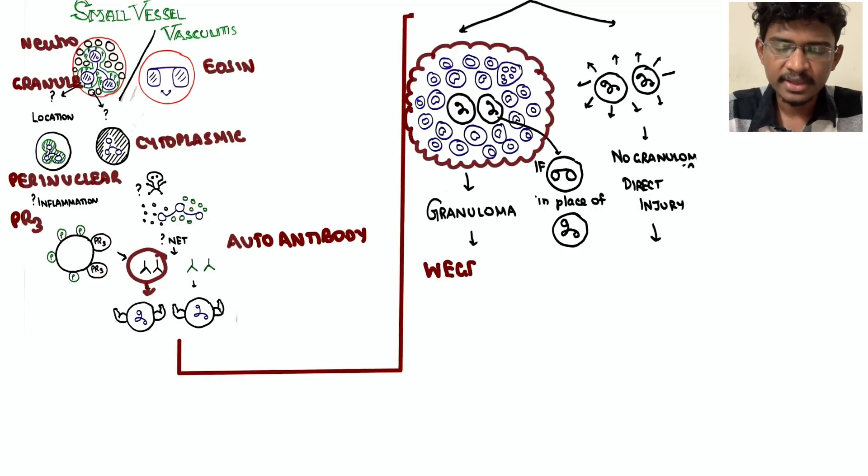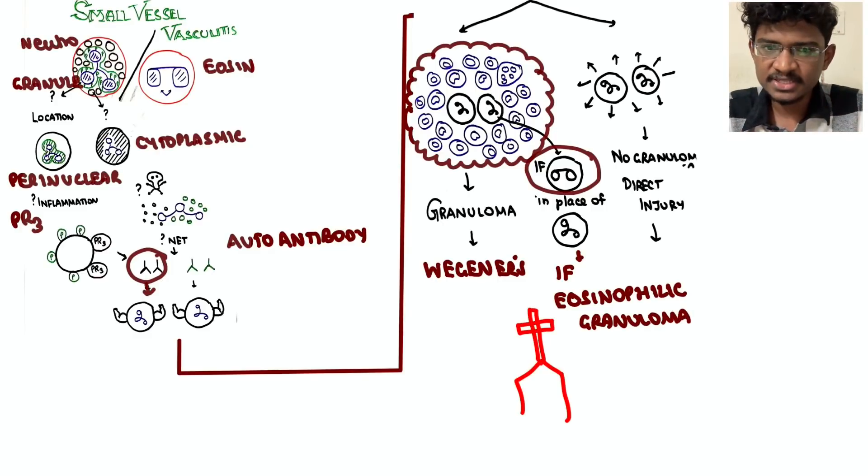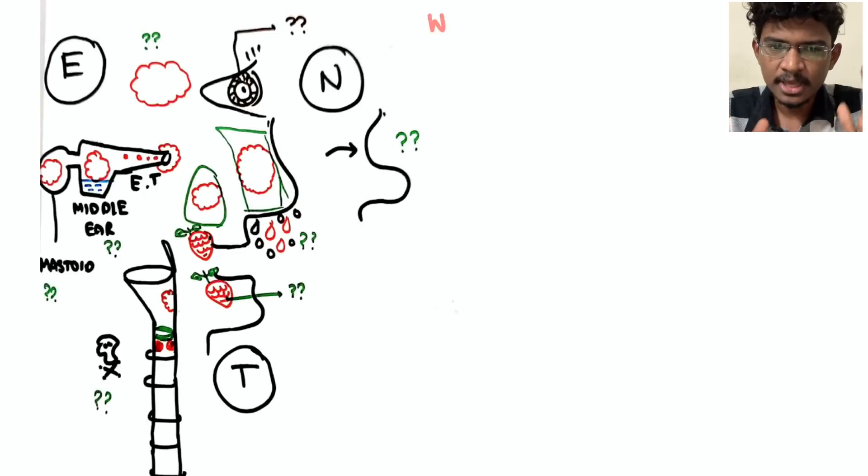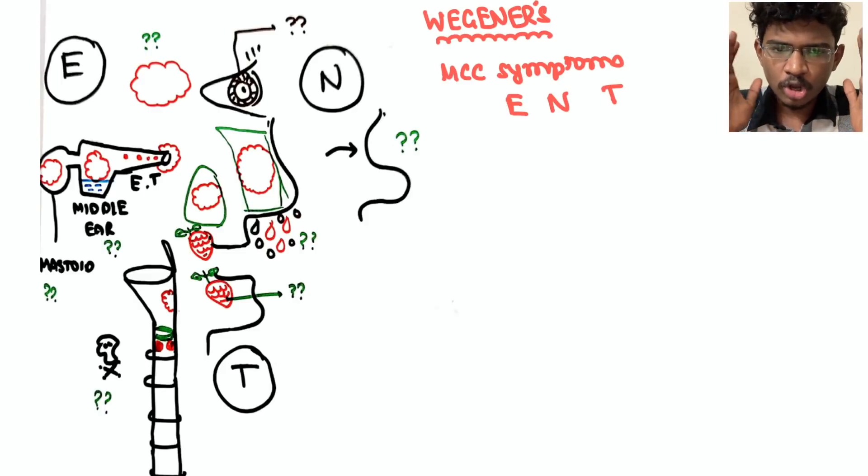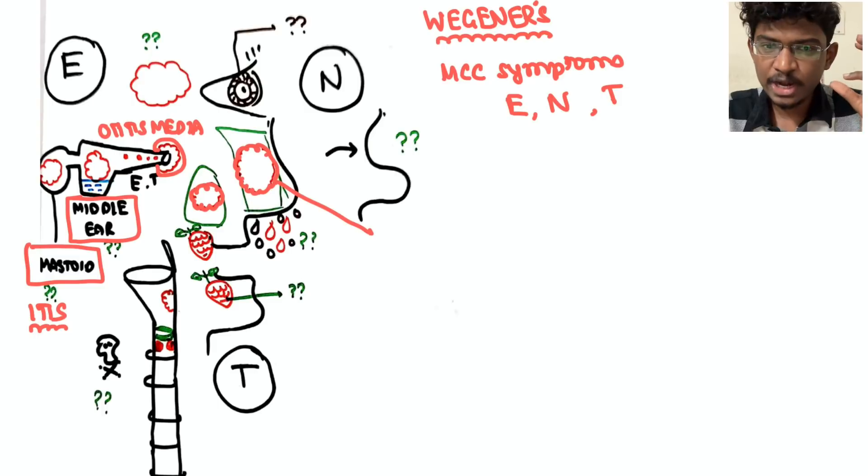So if neutrophils are activated in one type, what happens is they attract monocytes, histiocytes, giant cells will form, and a granuloma will be formed by a neutrophil. Then it is Wegener's granulomatosis, or the same granuloma was formed by the eosinophil activation, then it is Churg-Strauss syndrome. Or there is no granuloma - directly whatever cytokines which are released from the neutrophils if it injures, then it is microscopic polyangiitis. This is the three small vessel vasculitis.